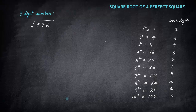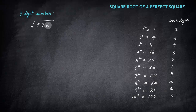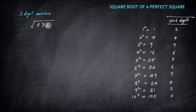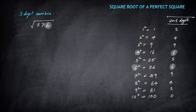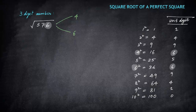Step 1 is to notice the last digit — which is 6. Looking at the unit digit column, 6 appears as the unit digit of both 4 squared and 6 squared. So the unit digit of our answer will be either 4 or 6. This is Step 1: determination through the unit digit.